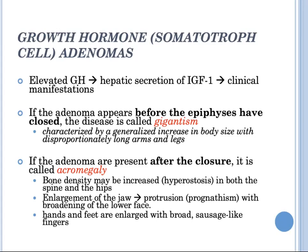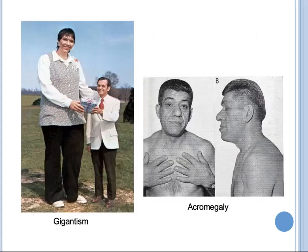In acromegaly, bone density may increase (hyperostosis) in both the spine and hip. There is enlargement of the jaw resulting in its protrusion — prognathism — and broadening of the lower face. The feet and hands are enlarged, and the fingers become broad and sausage-like. Pictures showing gigantism demonstrate a generalized increase in body size with disproportionately long arms and legs, while images of acromegaly show enlargement of the jaw, broadening of the lower face, and sausage-like fingers.